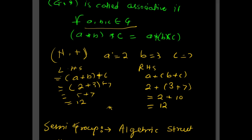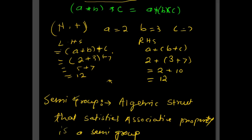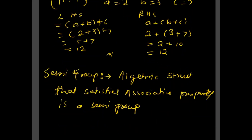So this is the associative property, and the algebraic structure that satisfies the associative property is called a semi-group. In the next lecture, we will study the monoid and inverse. Thank you.